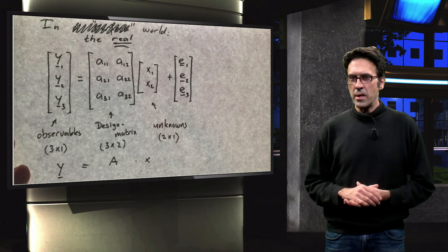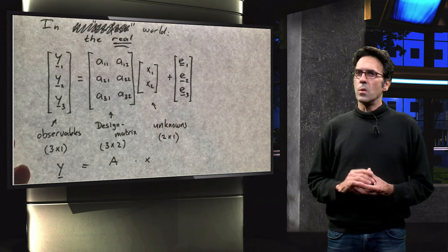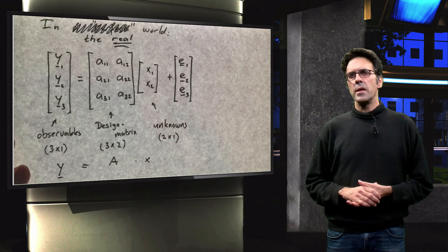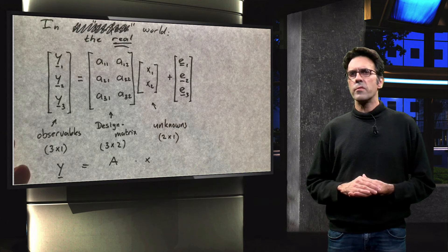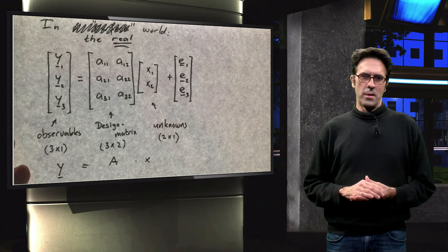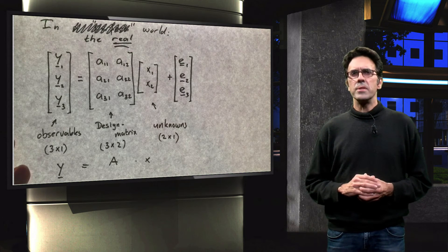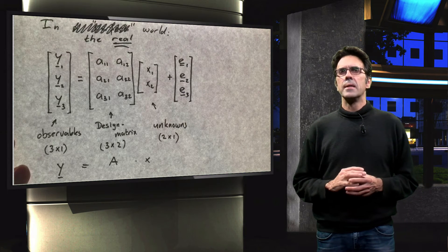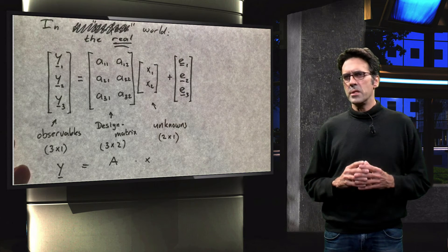What can we say about the errors? We know that they are stochastic variables, and therefore they can take any value from the probability distribution that describes them. However, the whole idea of making good measurements implies that we can expect that the value of the error should be zero.